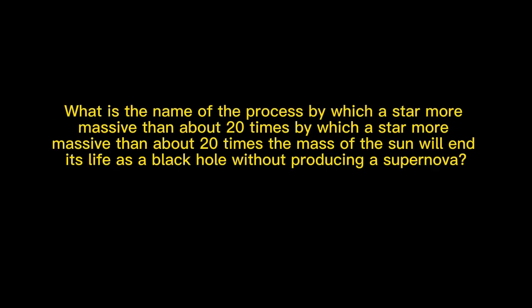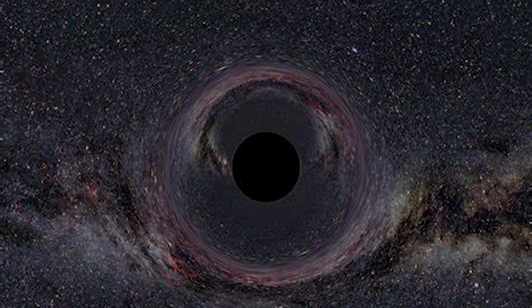What is the name of the process by which a star more massive than about 20 times the mass of the sun will end its life as a black hole without producing a supernova? Direct Collapse.